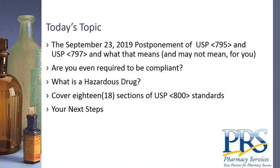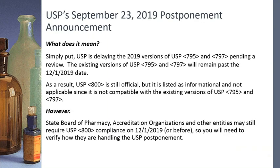In today's webinar I'm going to go over a couple different things: first, the September 23rd announcement that USP made postponing USP 795 and 797 — the 2019 versions — and what that means for you. Also, who actually needs to be compliant with USP 800, what is a hazardous drug, each of the 18 sections of USP 800, and what your next steps need to be to become USP 800 compliant.